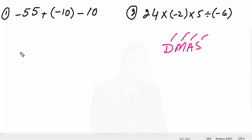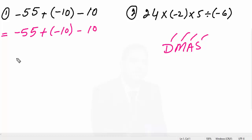Let's set up the first question. We have minus 55, plus minus 10 into minus 10 — I've written the same values. Now notice: here there is a plus sign and a minus sign, because plus multiplied by minus — what is inside the bracket shows multiplication. Plus multiplied by minus gives a minus sign here.